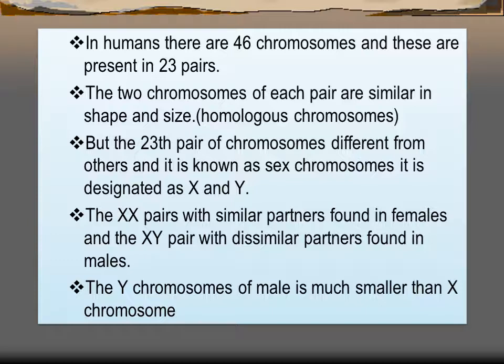The 23rd pair is different from the other 22 pairs — we call it the sex chromosome, designated as X and Y. The XX pair, with similar partners of similar shape and size, is present in females. The XY pair is present in males, and the Y chromosome is much smaller than the X chromosome.